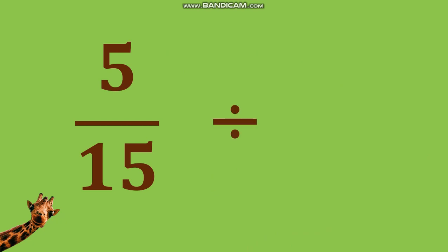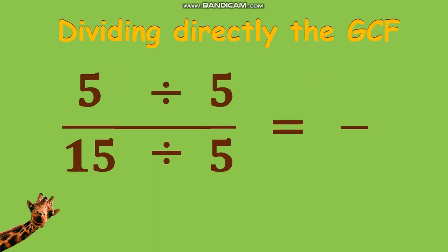Let's start with 5 fifteenths. What is the GCF of 5 and 15? Correct, and that is 5. In this video, I am going to show you three ways on how to change a fraction to the lowest term.